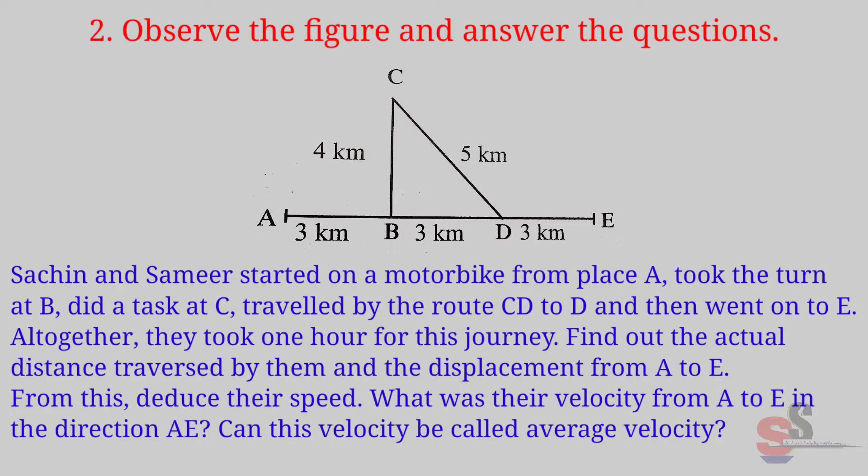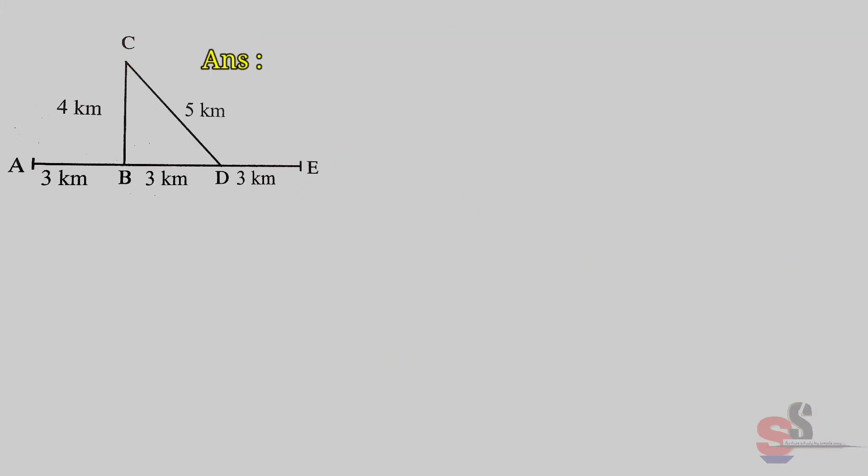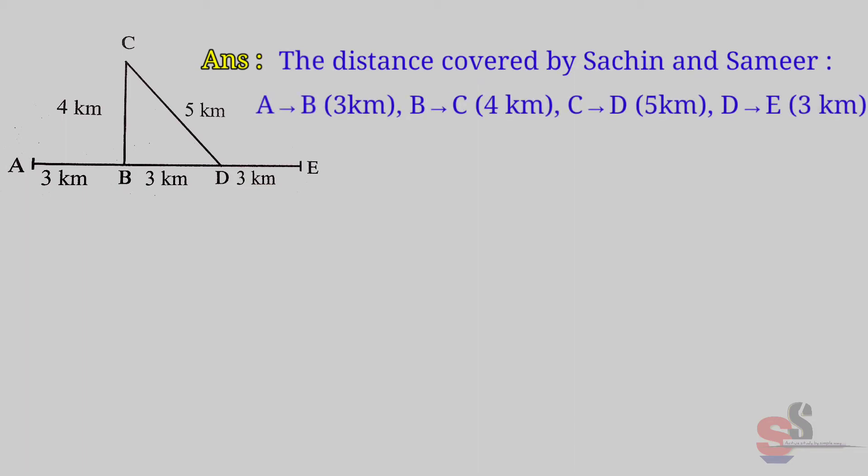Find out the actual distance traversed by them and the displacement from A to E. From this, deduce their speed. What was their velocity from A to E in the direction AE? Can this velocity be called average velocity? Answer: First of all, we see the distance covered by Sachin and Samir.